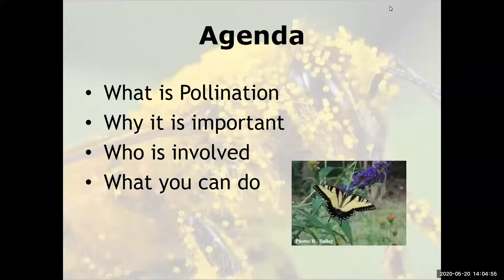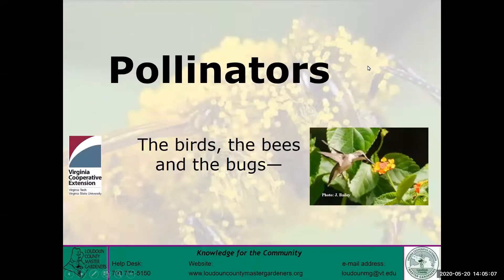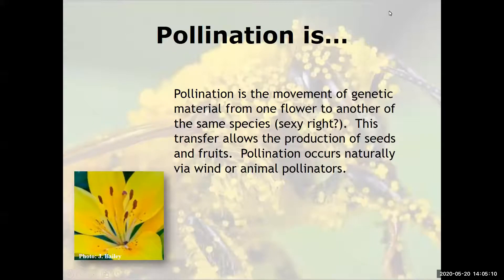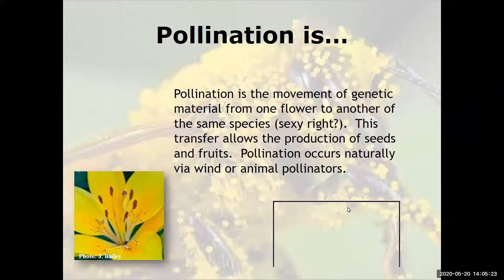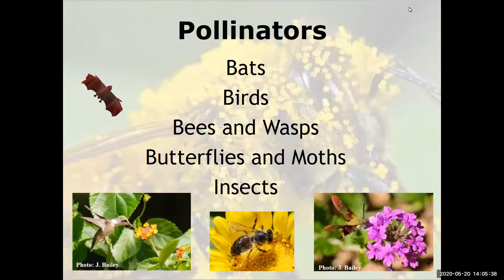We will talk about what is pollination, why it's so important, who is involved, and what you can do. Pollination occurs when pollen is moved within flowers or carried from flower to flower by pollinating animals such as birds, bees, bats, and butterflies, or by the wind. This transfer allows the production of seeds and fruits. It is the transfer of pollen from a male part of a plant to a female part, enabling fertilization.